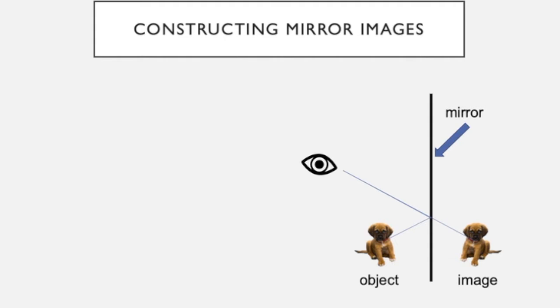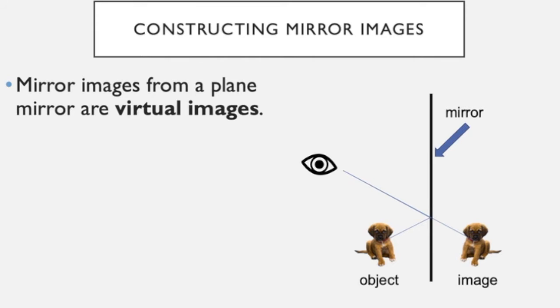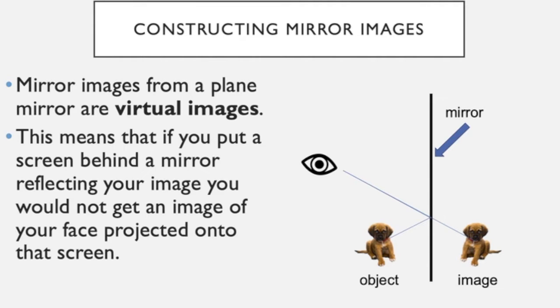So here you can see we've got an image formed of a dog in a mirror. Mirror images from a plane mirror are virtual images. This means that if you put a screen behind a mirror reflecting your image, you would not get an image of your face projected onto the screen. The image isn't real.